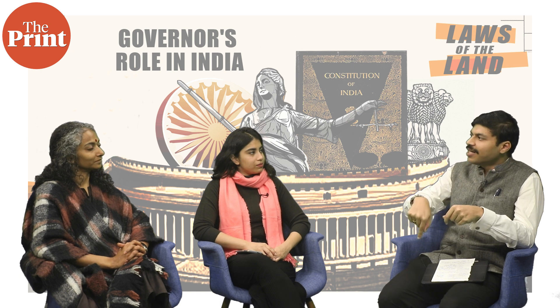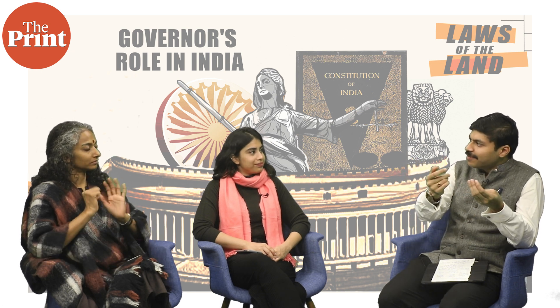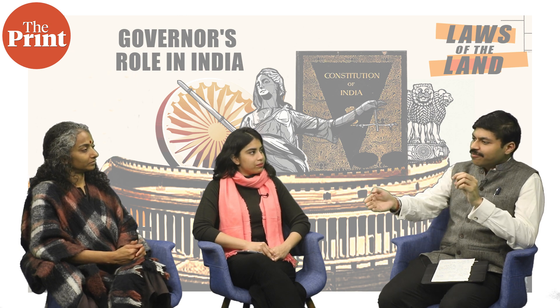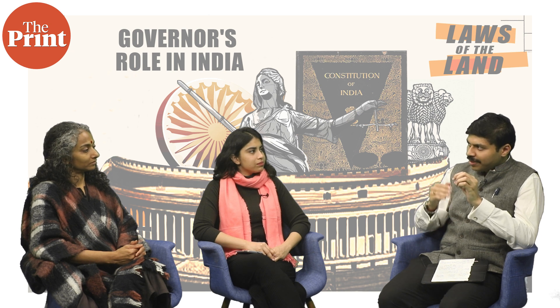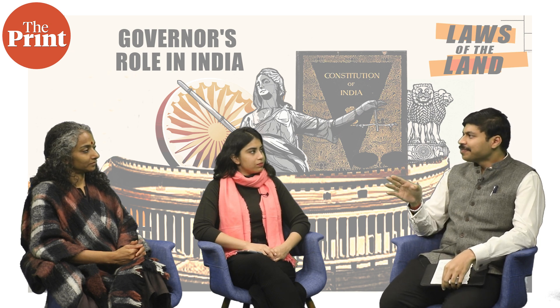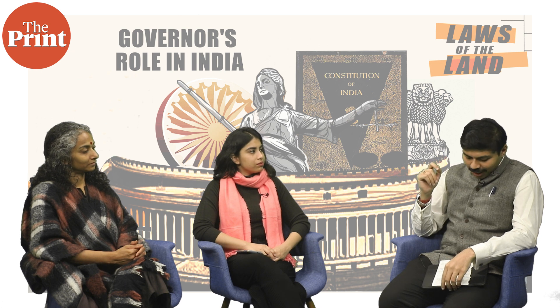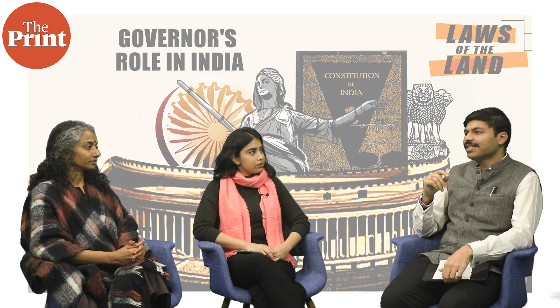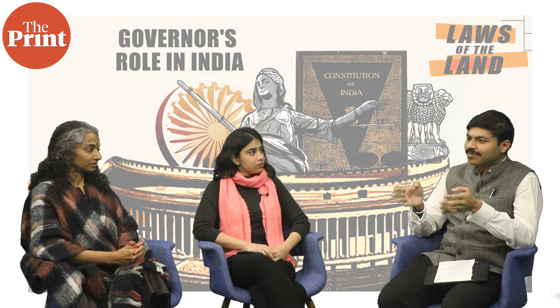In July, the Punjab government sent a recommendation to convene the assembly for money bills under Article 207. The governor responded saying that because they passed four bills in the allegedly illegal sessions of 19th and 20th June — for which he had taken legal advice from a constitutional expert — he would not convene for the money bills either. Communication went back and forth until October, while he continued sitting on those four bills completely silently.